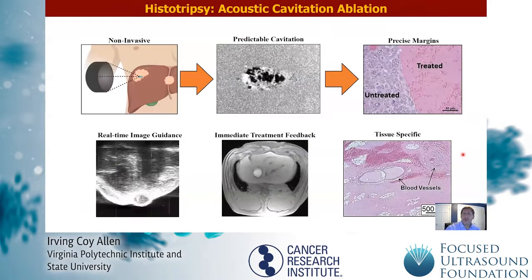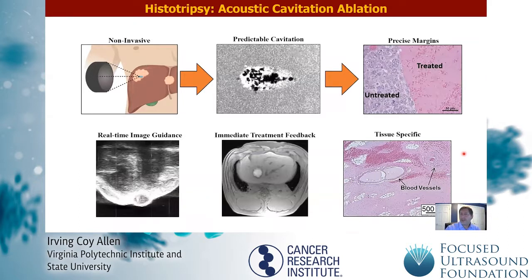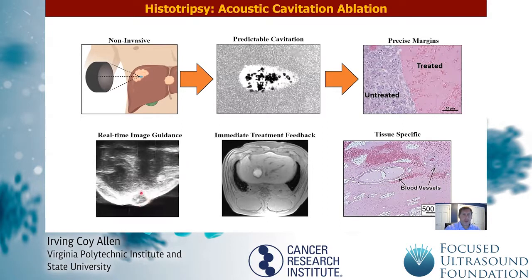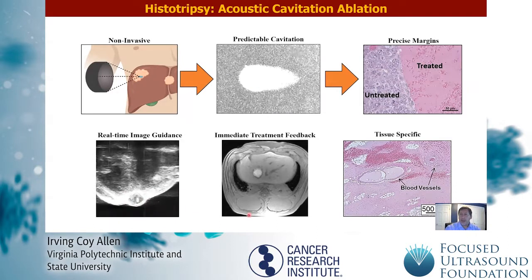For those that aren't familiar with histotrypsy, it causes tumor ablation through cavitation. Basically, a bubble cloud is generated in the ablation zone. There are a lot of advantages to histotrypsy — for example, we can generate precise margins and it allows real-time image guidance. This is the bubble cloud in a mouse mammary tumor; you can see the ablated zone here. We also get immediate treatment feedback, and histotrypsy can also be tissue-specific.